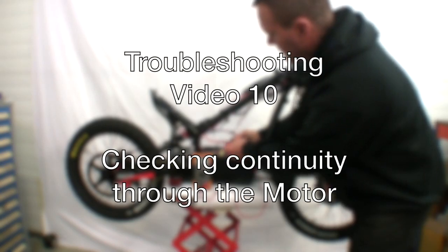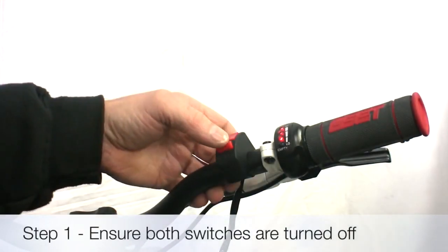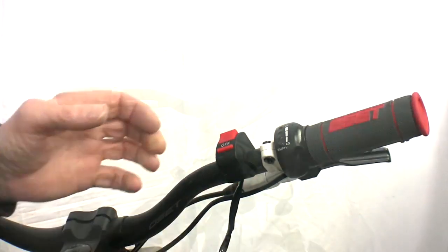In this video we'll be checking the bike's motor circuit. First, ensure both the key and handlebar switches are turned off.